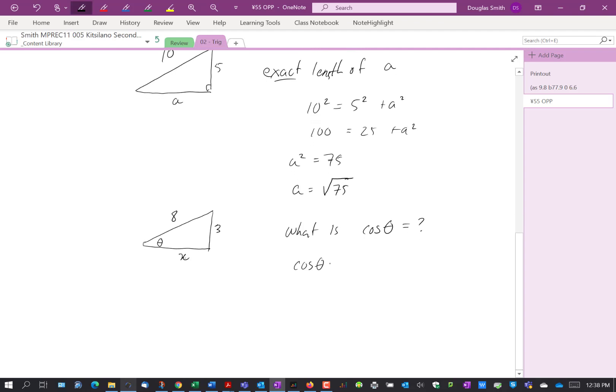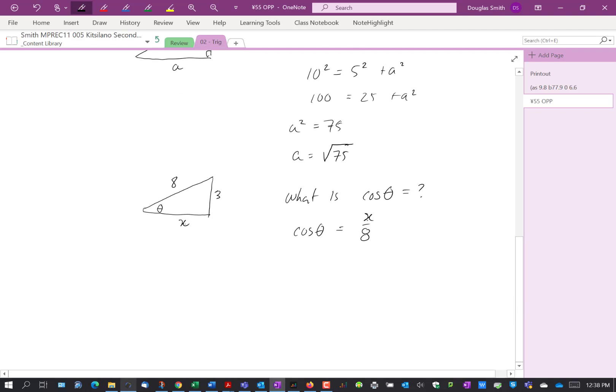Well, cos theta is x over 8, but we're not done yet, because we can figure out what x is. So 8 squared is equal to 3 squared plus x squared.